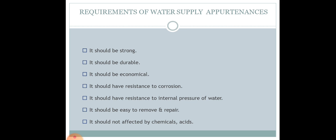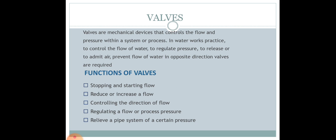The basic requirements of water supply appurtenances are that they should be durable, strong, economical, and resistant to corrosion in any form. The material should not corrode due to the presence of moisture and should have sufficient resistance to corrosion. It should also have sufficient resistance against the internal pressure of water, since water flows with pressure. The appurtenance should not fail under internal pipeline pressure. It should be easy to remove and repair, and should not be affected by any sort of chemicals or acids.